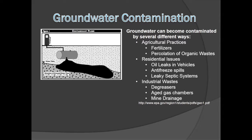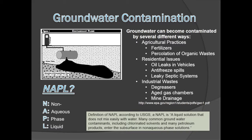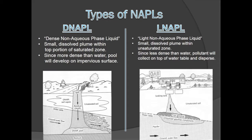Many of the groundwater contaminants are non-aqueous phase liquids, or NAPLs, which are solutions that don't mix well with water. NAPLs are classified as either dense (DNAPLs) or light (LNAPLs). DNAPLs are more dense than water, so they penetrate both the unsaturated and saturated zones and pool on an impervious surface. This pool creates a small dissolved plume within the top portion of the saturated zone. LNAPLs are less dense than water, so they collect on top of the water table and create a small dissolved plume within the unsaturated zone.